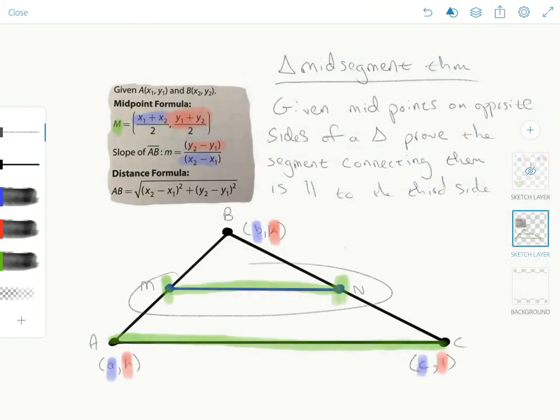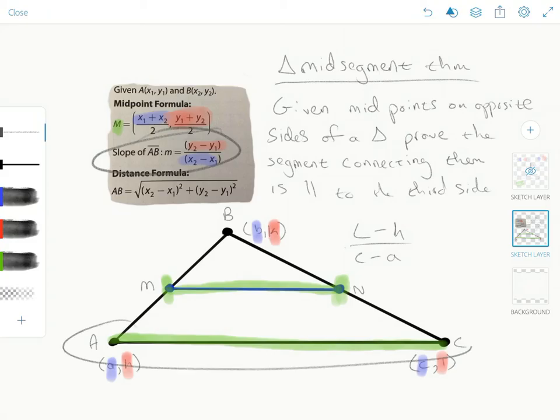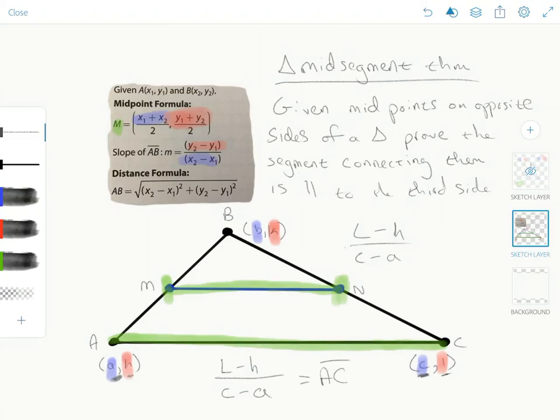We've shown here that the slope of MN is L minus H over C minus A. And look what happens if we apply the slope formula to this line segment down here. Y2 minus Y1 would be L minus H, and X2 minus X1 would be C minus A. So the slope of AC is equal to L minus H over C minus A. And the slope of MN is equal to the same thing.